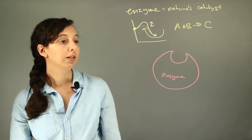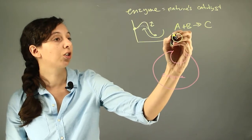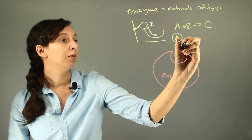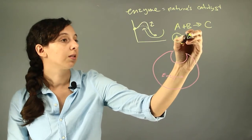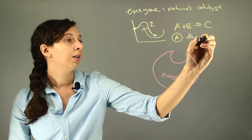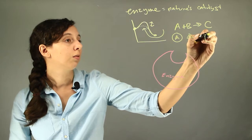Let's say that A is actually this circle, and B looks like this little triangle. And then C ends up being a circle with a triangle on it.